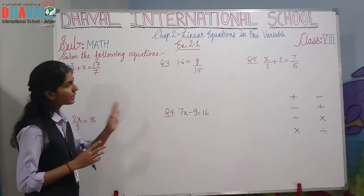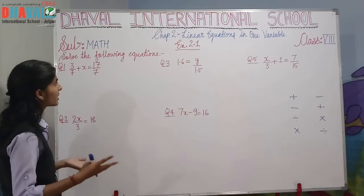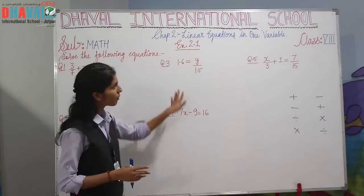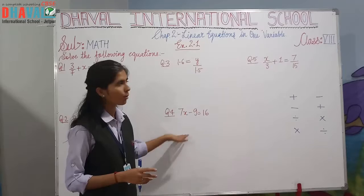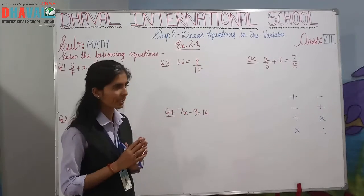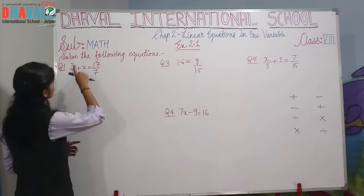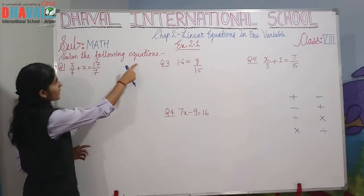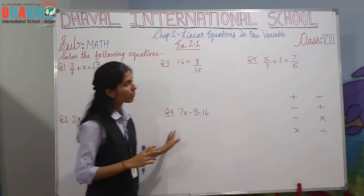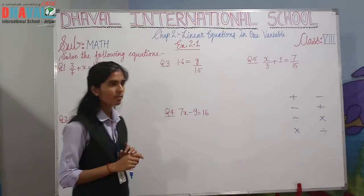So we have to solve the following equations. These are some of the sums from your exercise 2.1 of the textbook. So let's begin — the question says: solve the following equations. We have 5 equations which we have to solve.